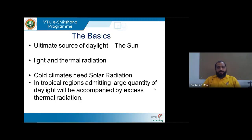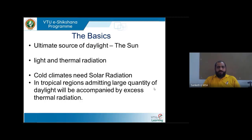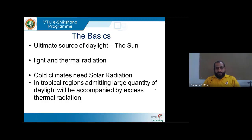Starting with basics: the sun is the main or ultimate source of daylight. It is naturally and abundantly available. This natural source of daylight not only provides light but also gives us heat, that is thermal radiation. So when we try to harvest light, we are also getting heat along with it. This is very beneficial for cold climates where solar heating or warming of inner spaces is desired.